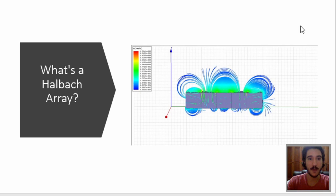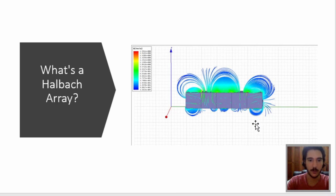What is a Halbach array? Essentially, a Halbach array is a special arrangement of permanent magnets that augments the magnetic field on one side, while cancelling the magnetic field near zero on the other side. The image here is from a simulation I did a couple days ago, and basically that's what a Halbach array is.